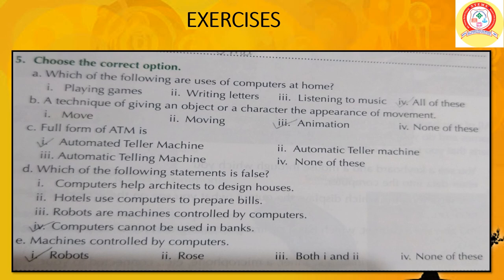C: Full form of ATM is Automated Teller Machine — Answer: 1. D: Which of the following statements is false? Options: 1. Computers help architects design houses. 2. Hotels use computers to prepare bills. 3. Robots are machines controlled by computers. 4. Computers cannot be used in banks. Answer: 4 — Computers cannot be used in banks, which is false. E: Machines controlled by computers — Answer: Robots.